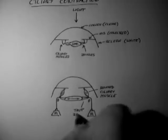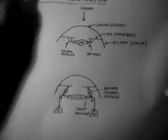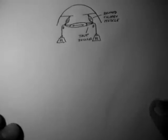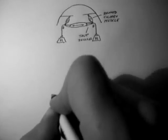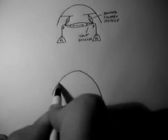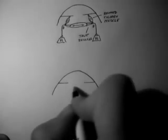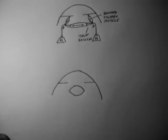However, in the other case where the ciliary muscles are contracted, I'll draw the situation. This time we have a fat lens, and the zonules are very relaxed.